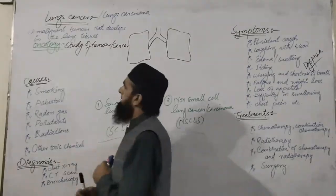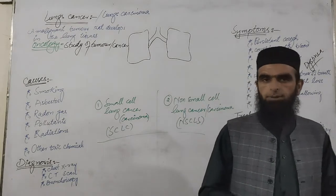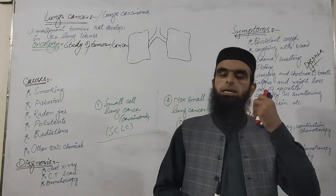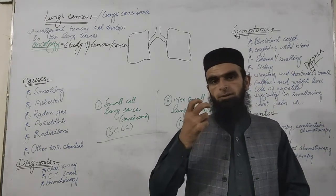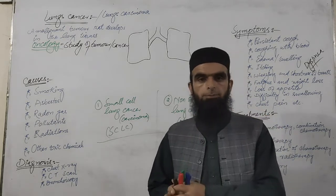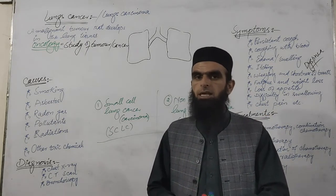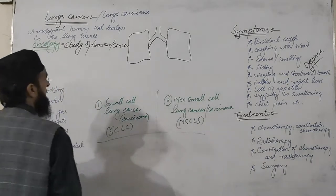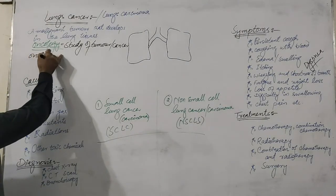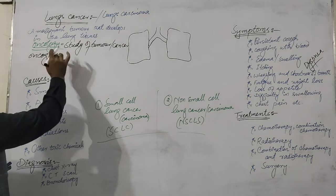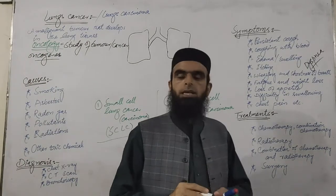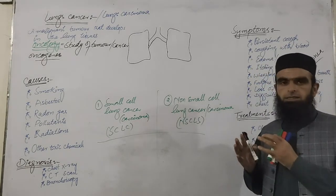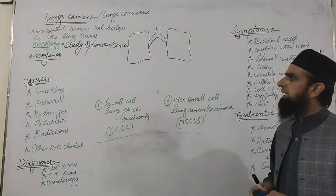Cancer is caused by different ways and means. It may be caused by different chemicals, rays, and radiations, and it may also be caused by a gene attacked by mutation. Whenever mutation takes place in the genes, it causes cancer in the body. Those genes which are responsible for cancer are called oncogenes.